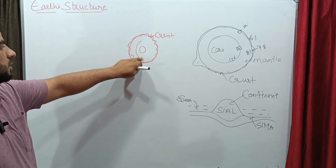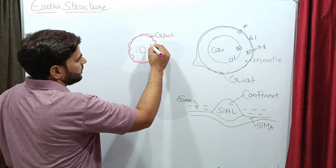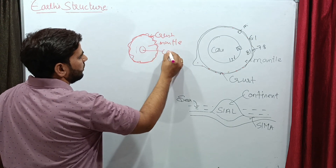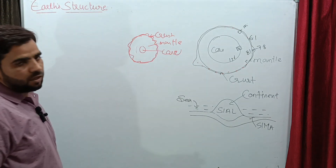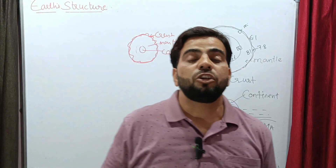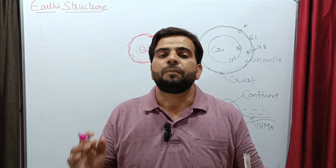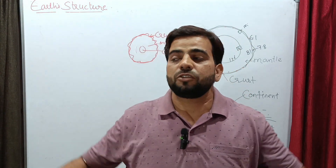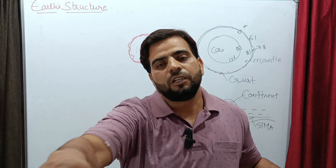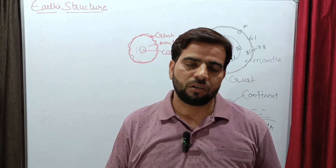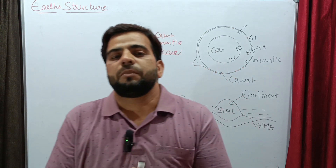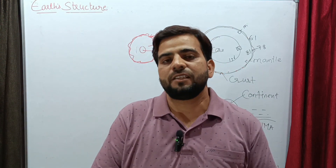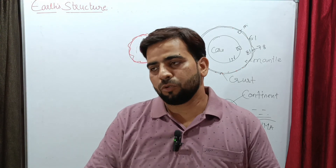So, the outermost surface is the crust, below that is the mantle, and the last one is the core. The crust is considered to be the lithosphere — the part made up of rock. The surface on which we are standing is the lithosphere. The crust, or lithosphere, is the part of the Earth made up of rock.